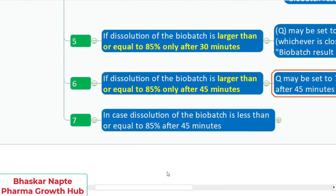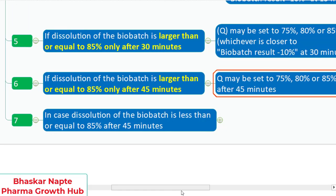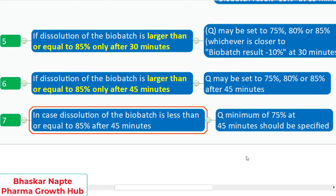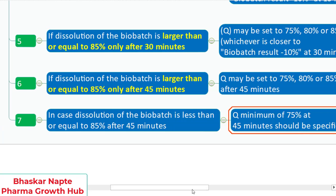Point 7 — last but not least: if the dissolution of the bio batch is less than or equal to 85 percent even after 45 minutes, the dissolution release quantity Q must be set to a minimum of 75 percent at 45 minutes. You cannot set the specification less than 75 percent according to this guideline.